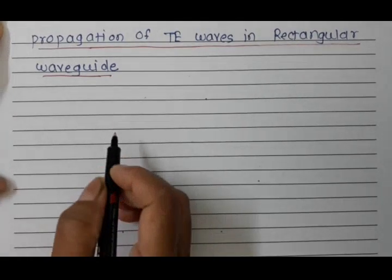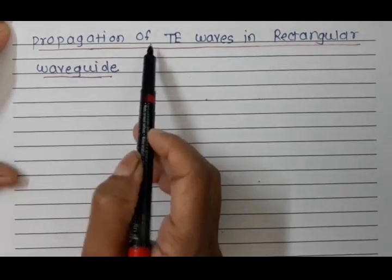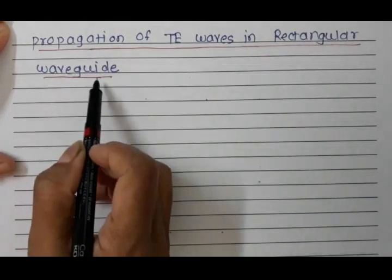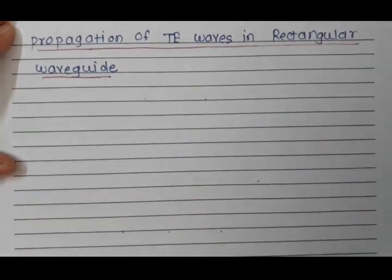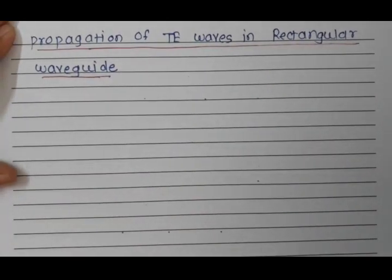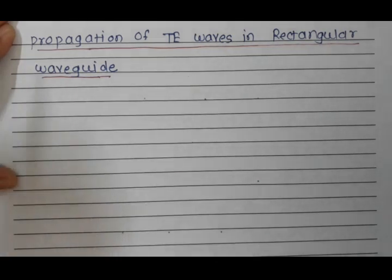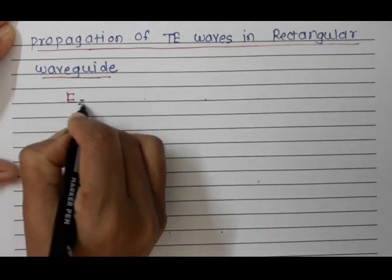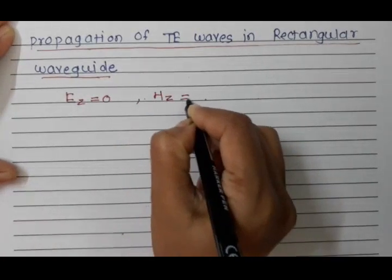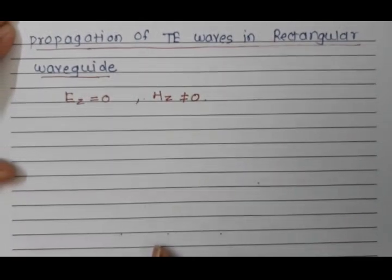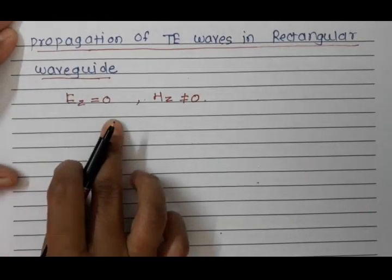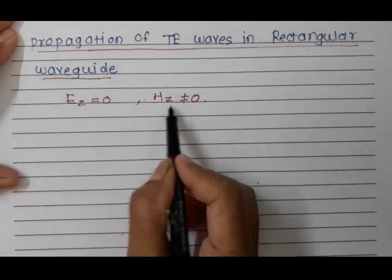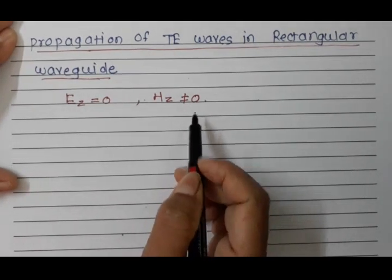Hello all. In today's session we are going to discuss about the propagation of TE waves in a rectangular waveguide. When we say that a wave is the TE wave, the long form of TE is nothing but the transverse electric wave, whereas the electric field is transverse to the direction of propagation. So EZ is equal to 0 and HZ is not equal to 0.